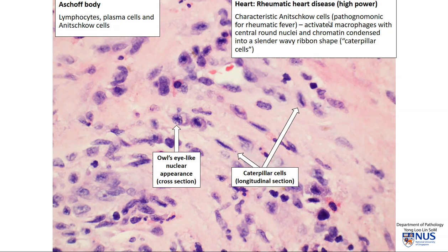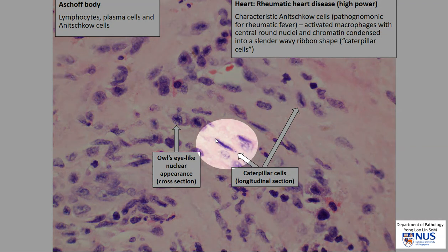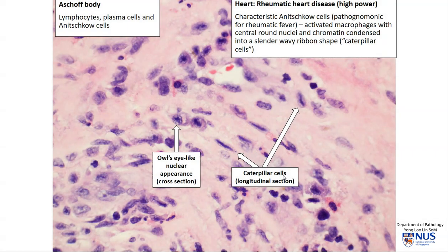Anitschkow cells are actually macrophages and they're quite pathognomonic for rheumatic fever. We can see an example here, where in the nucleus, the chromatin condenses centrally, almost to a ribbon. This kind of gives it a caterpillar appearance, so these are also known as caterpillar cells if we see them cut longitudinally. However, if they are sectioned transversely like this, this is sometimes described as an owl's eye-like nuclear appearance.